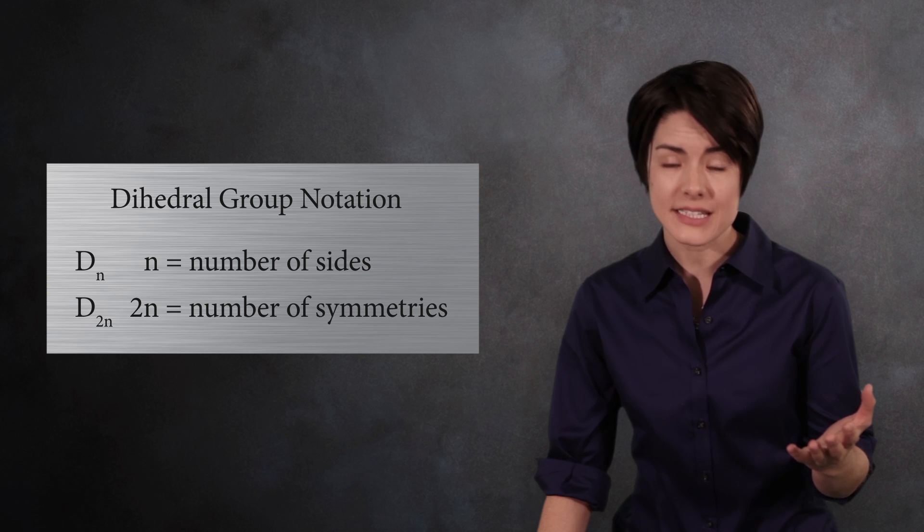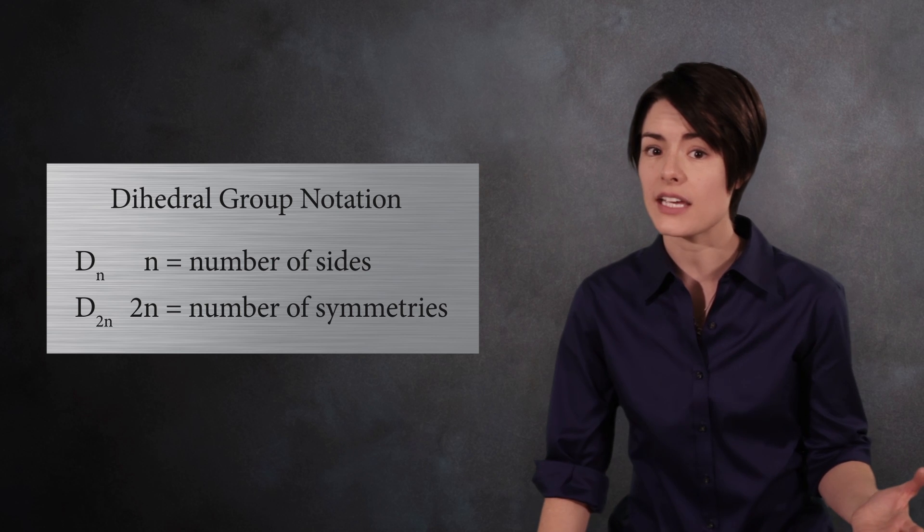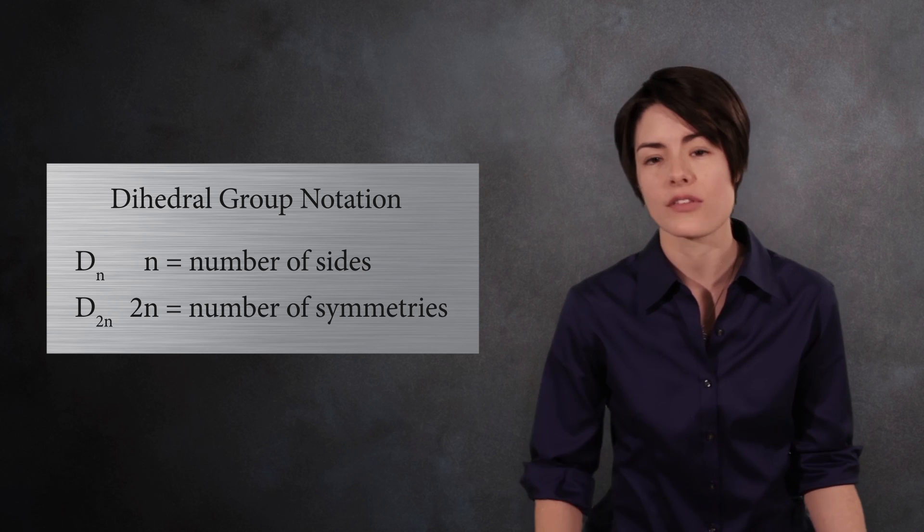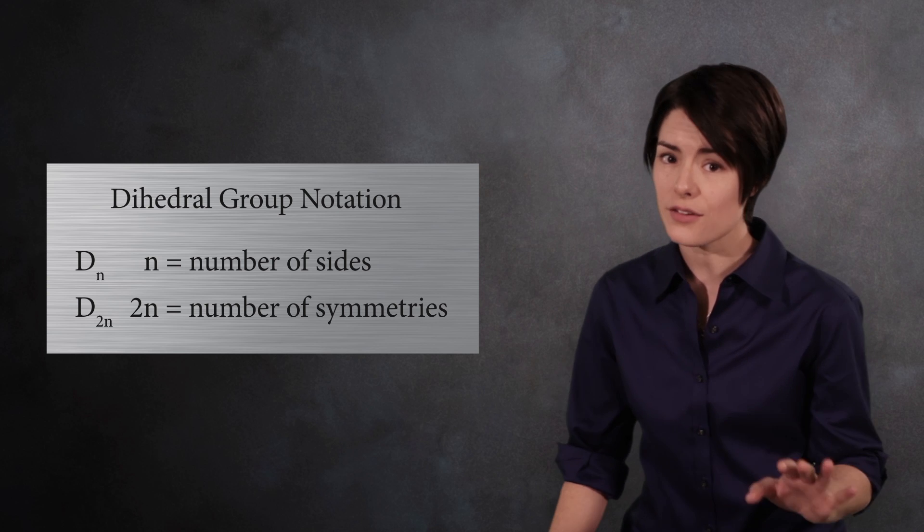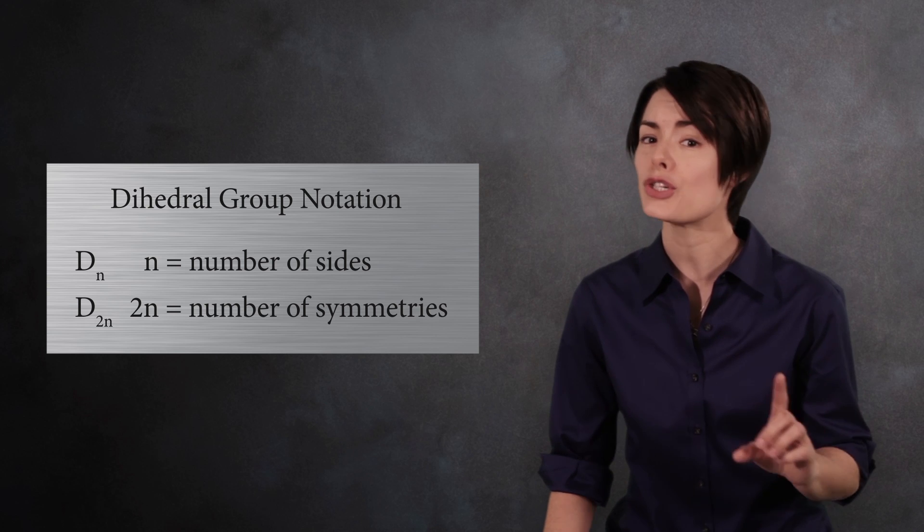For example, D sub 6 could either mean the dihedral group of the hexagon, or the dihedral group for an equilateral triangle. When you're talking to your friends about group theory, be sure you agree on notation.